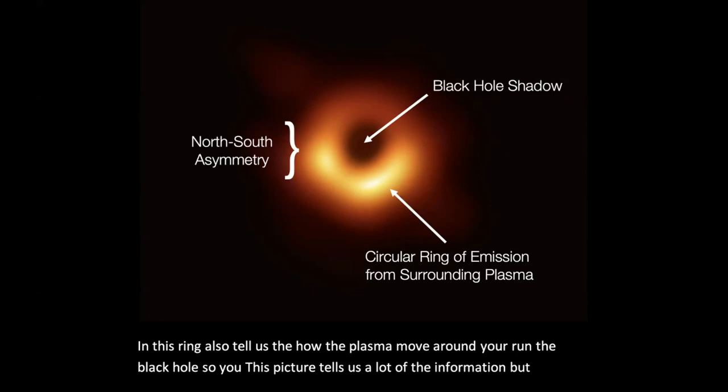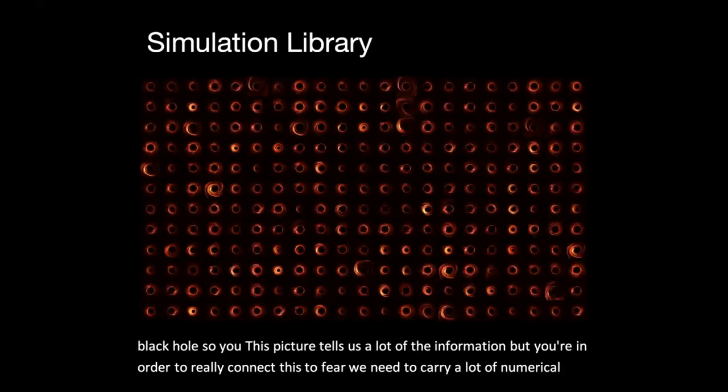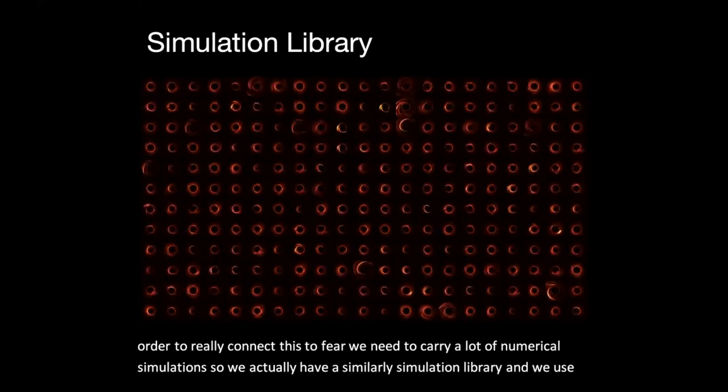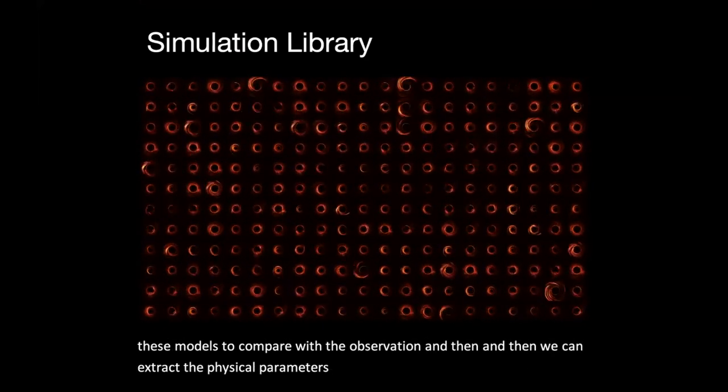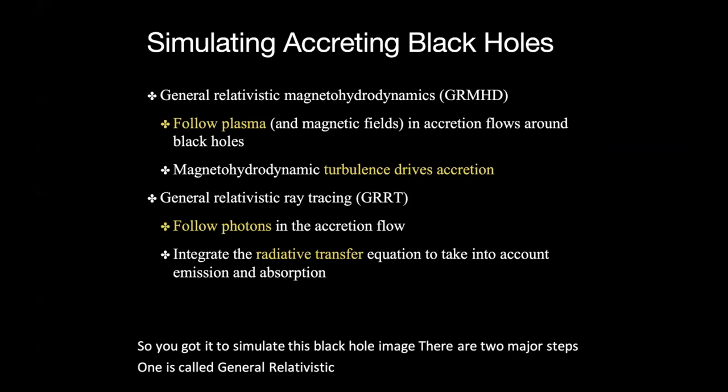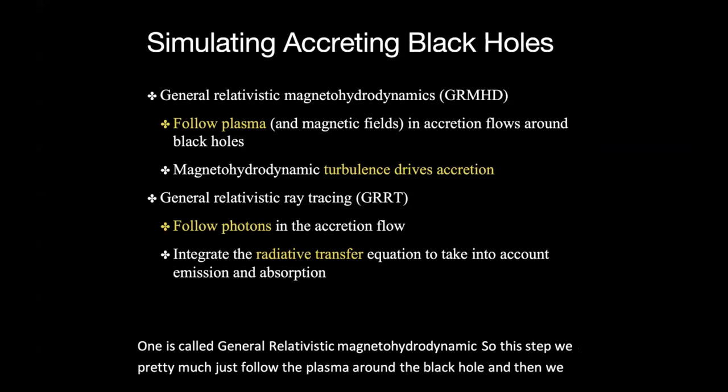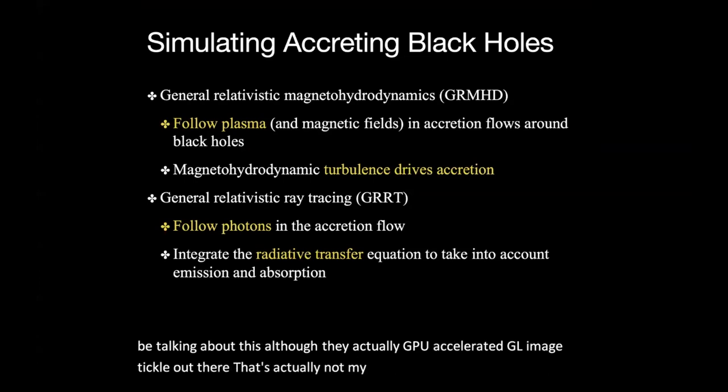But in order to really connect this to theory, we need to carry a lot of numerical simulations. So we actually have a simulation library, and we use these models to compare with the observation, and then we can extract the physical parameter that we're interested in. Okay, so in order to simulate this black hole image, there are two major steps. One is called general relativistic magneto hydrodynamic. So this step, we pretty much just follow the plasma around the black hole. And then we follow the turbulence and we study the dynamics of this plasma. Now I won't be talking about this, although they actually have GPU accelerated GRMHD code out there, that's actually not my expertise here.